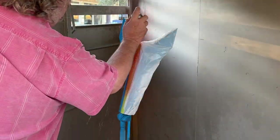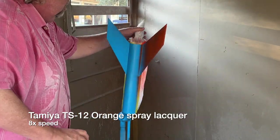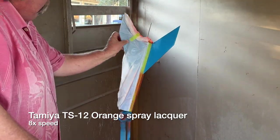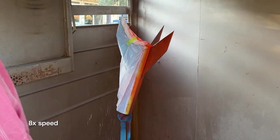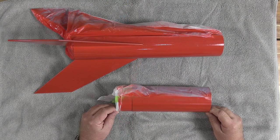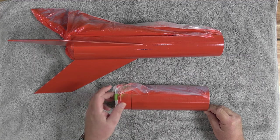Back in our palatial pro grade paint booth we can start applying the orange spray lacquer. Same process as before with long strokes that start off of the model and end off of the model. Our paint has had the opportunity to cure overnight so we can begin unmasking.